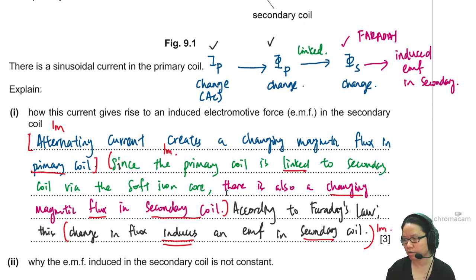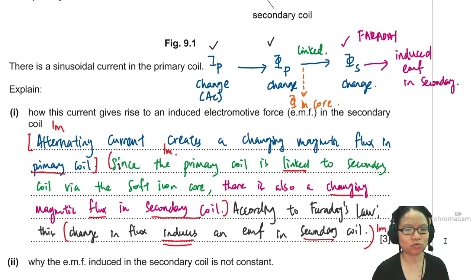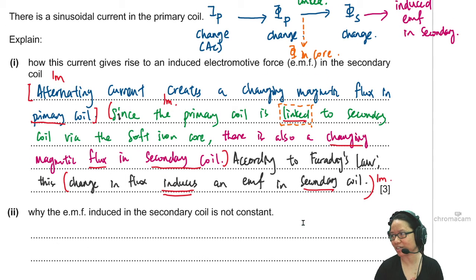Question here. Is it the same thing if I say there is a change in flux in the iron core? You could add another point. There is a change in flux in soft iron core. Primary coil is linked to soft iron core, secondary coil is linked to soft iron core. You could add this point here but this is covered in the idea of link. Normally I see the marks and count the lines. If it's three marks I'm like, no need. So I'm very transactional in this case.